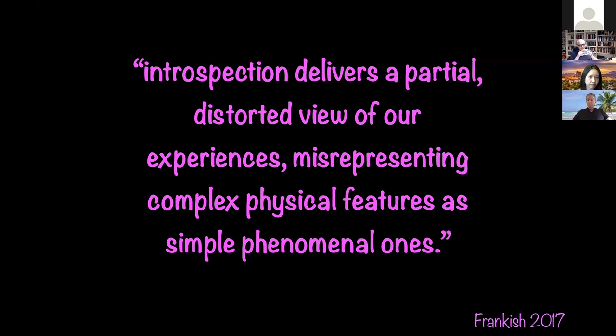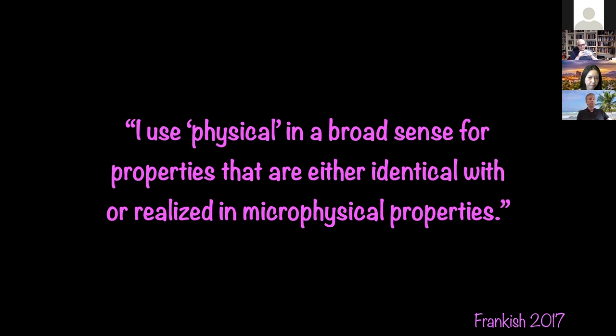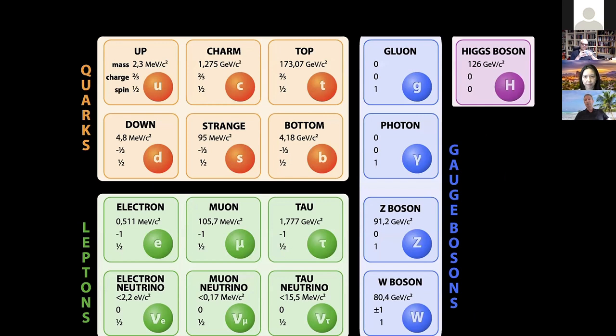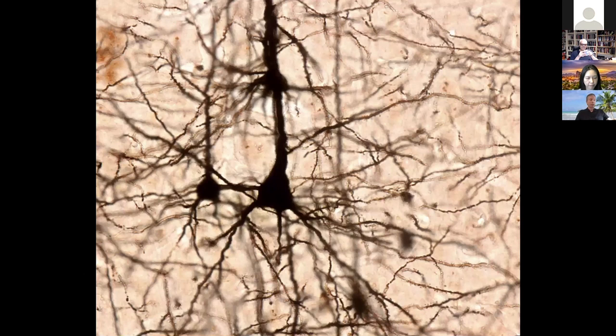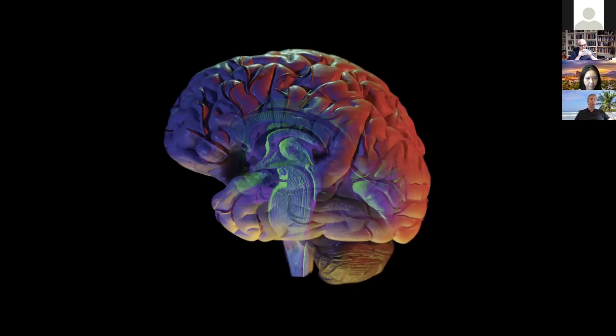Keith tells us what he means by the word 'physical.' He says he uses 'physical' in a broad sense for properties that are either identical with or realized in micro-physical properties — for example, the micro-physical particles of the standard model of physics. Some properties of neural activity are misrepresented by introspection as phenomenal experience. Frankish calls these 'quasi-phenomenal properties' — physical properties of the brain that are misinterpreted as phenomenal properties by introspective processes.